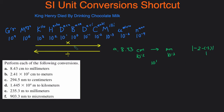Once you have the absolute value: if you're moving to the right on the prefix scale you multiply, and if you're moving to the left you divide. Since we're going from centi to milli we're going to the right, so we multiply. We do 8.43 multiplied by 10 to the 1, and that gives us 84.3 millimeters.